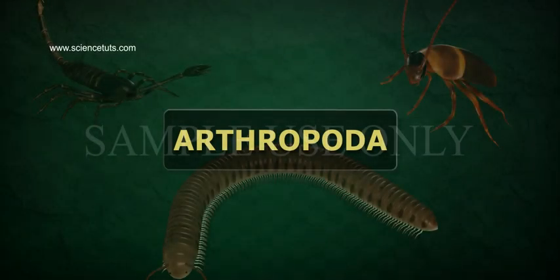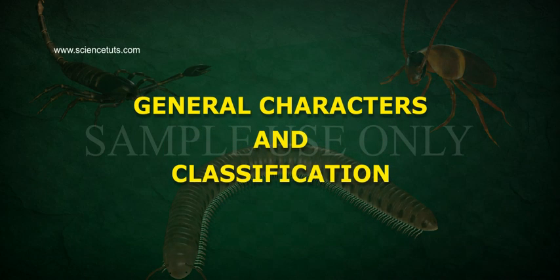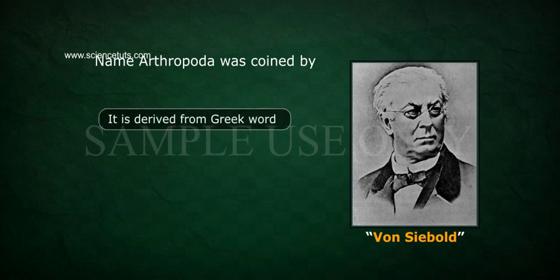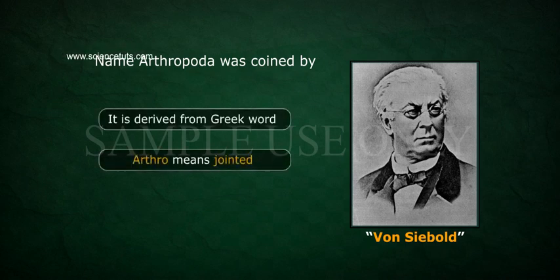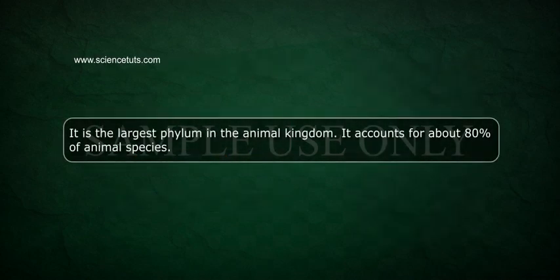Arthropoda: General Characters and Classification. The name Arthropoda was coined by von Siebold. It is derived from the Greek words 'arthro' meaning jointed and 'pod' meaning foot. It is the largest phylum in the animal kingdom, accounting for about 80% of all animal species.